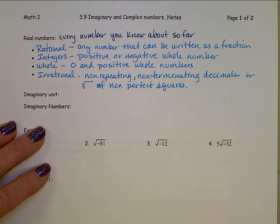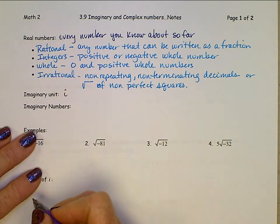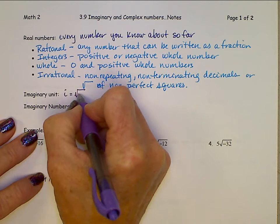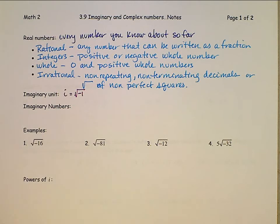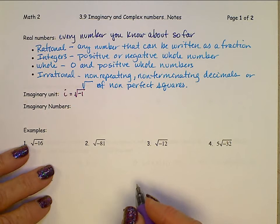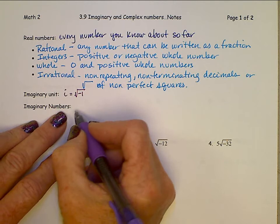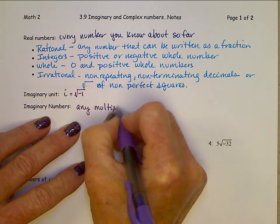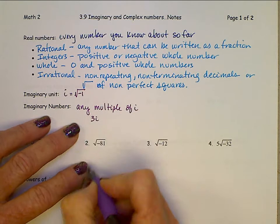We can now talk about imaginary numbers. There is an imaginary unit called i — i for imaginary. By definition, i is the square root of negative one. Up until now, you have not been able to take the square root of a negative number. As of today, you will be able to. An imaginary number is any multiple of i, for example 3i — some number times i.